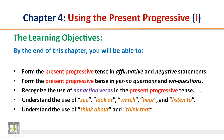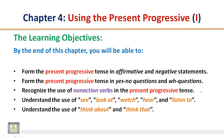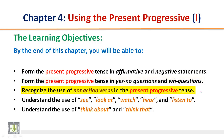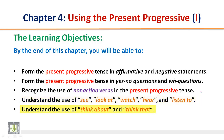By the end of this chapter, you will be able to: form the present progressive tense in affirmative and negative statements; form the present progressive tense in yes or no questions and WH questions; recognize the use of non-action verbs in the present progressive tense; understand the use of see, look at, watch, hear, and listen to; and understand the use of think about and think that.